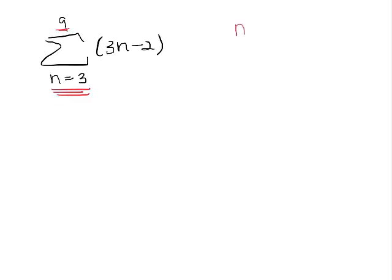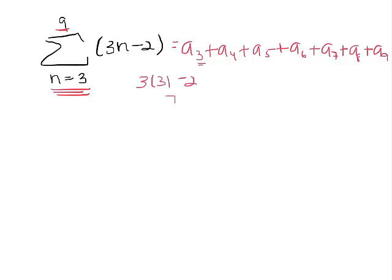So what I want to do is I want to add the numbers from a sub 3 to a sub 9. So I'm going to start with a sub 3. If I want a sub 3, I'm just going to replace n with 3. So I get 3 times 3 minus 2, that gives me 7.